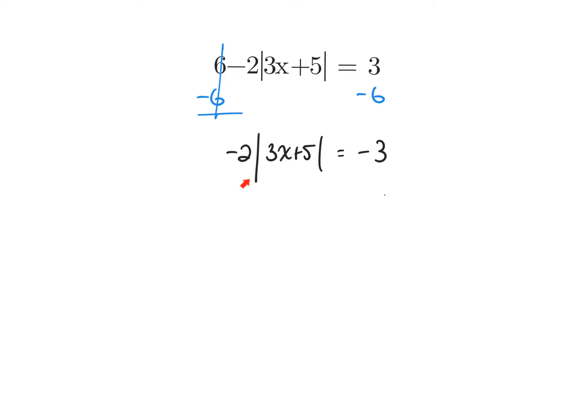Remember, you are looking at the connection between the absolute value bar and the 2 — there's nothing between them, which means multiplication. So the way you break this 2 away from the absolute value bar is through division. If you don't want to use division, you can multiply by the reciprocal. I'm going to multiply by negative one-half — I'm flipping it.